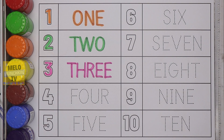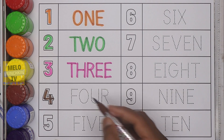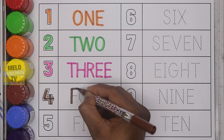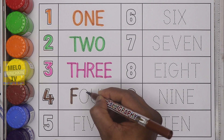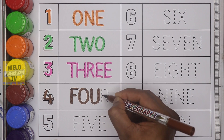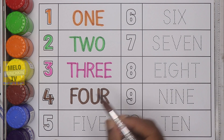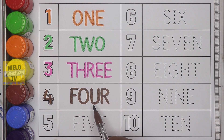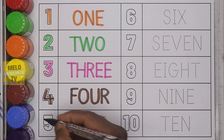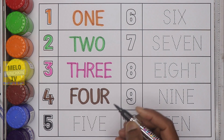Next, I'll take brown color and write number four. This is number four and the spelling is F-O-U-R, four.